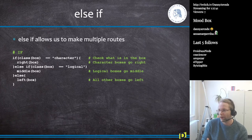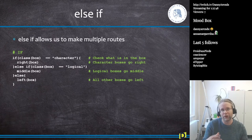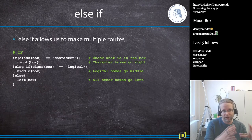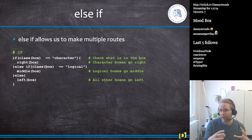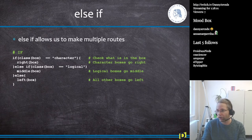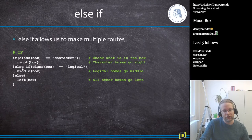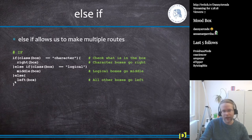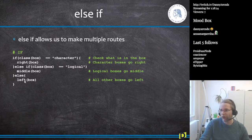You can extend branching with `else if`. For example, if a data frame column is character, do one thing; else if it's logical, do another; else send it to a third option. So: characters go to the right, logical values go to the middle, and numeric values or factors go to the left. You can also do numerical comparisons — if `x` is smaller than 5, print 'x is smaller than 5'. You can also compare two variables, or check all numbers in a vector using `all()` or `any()`.